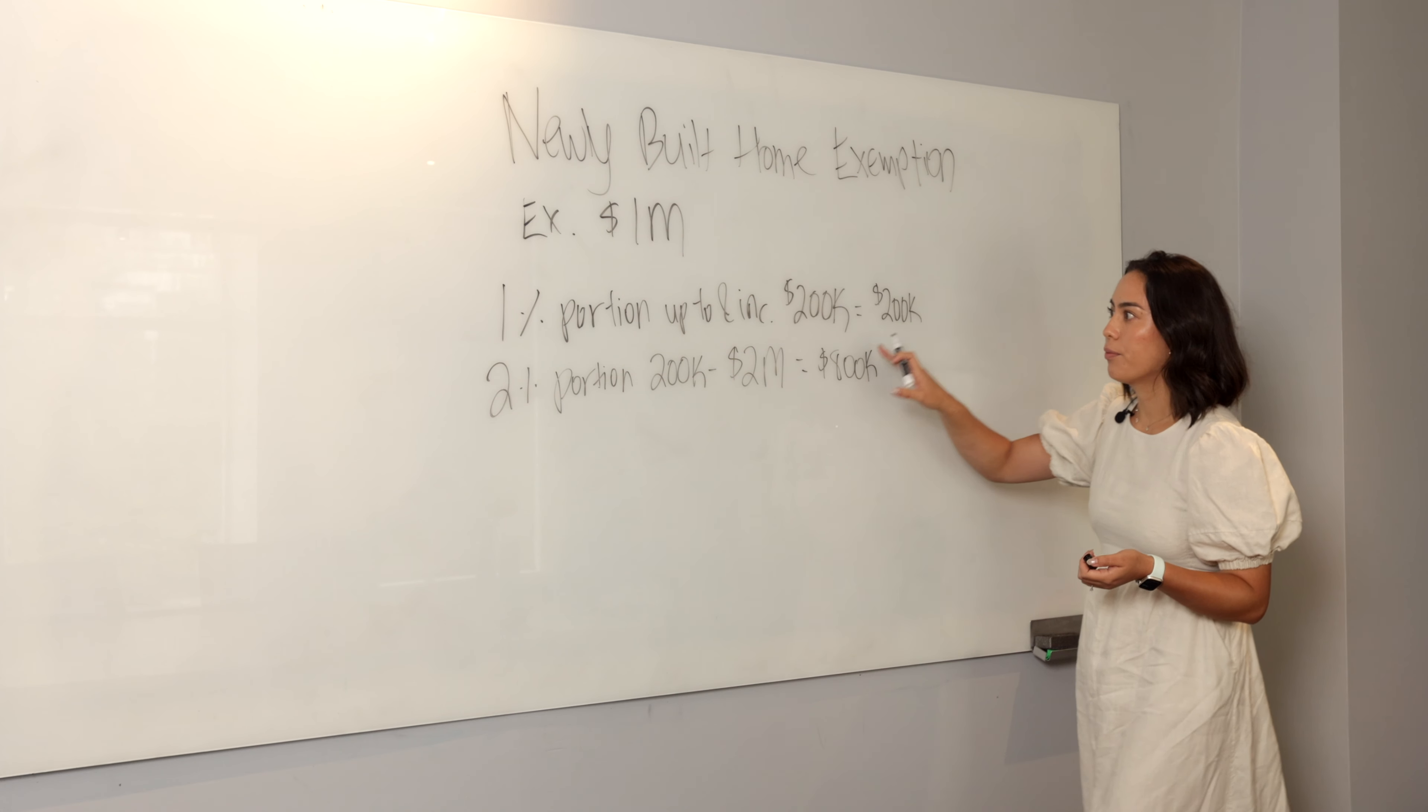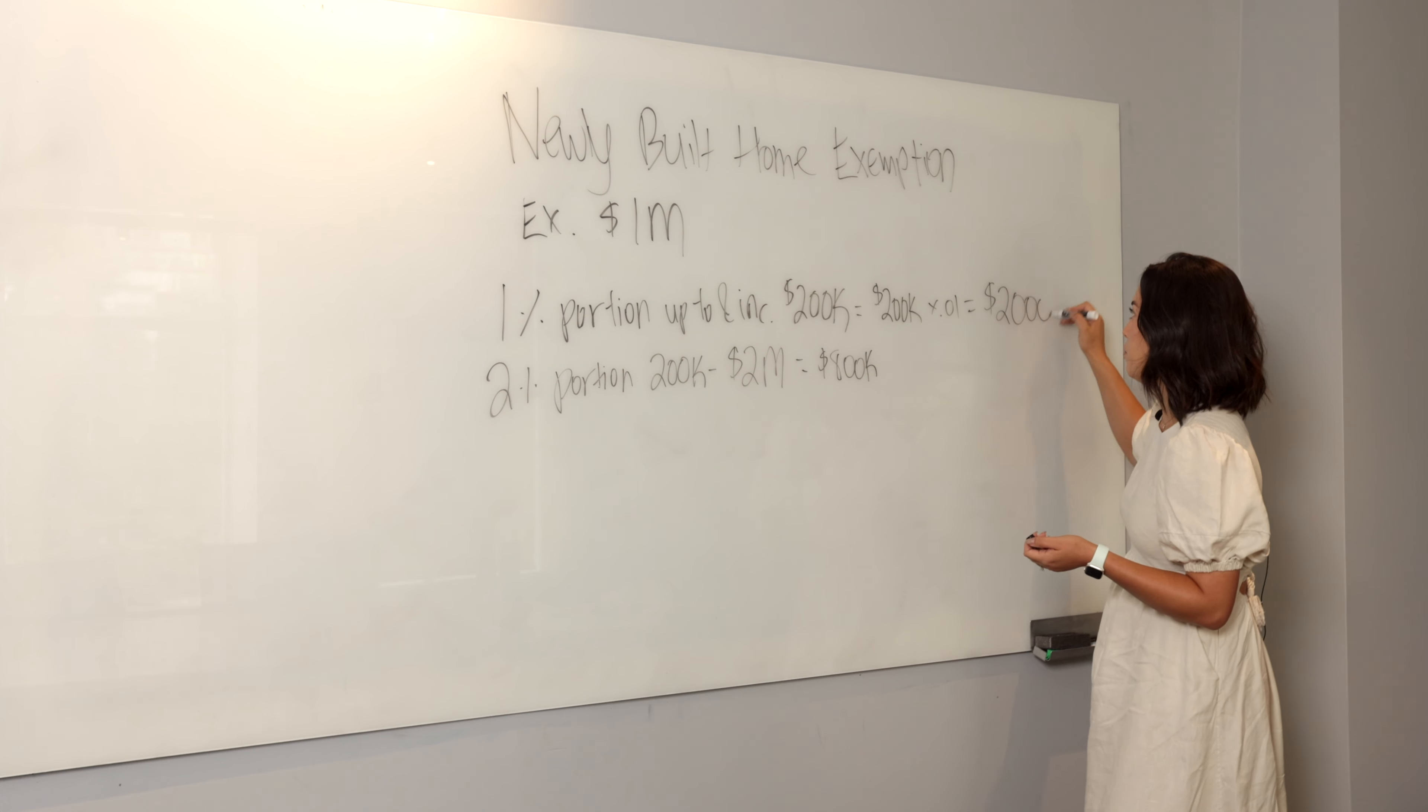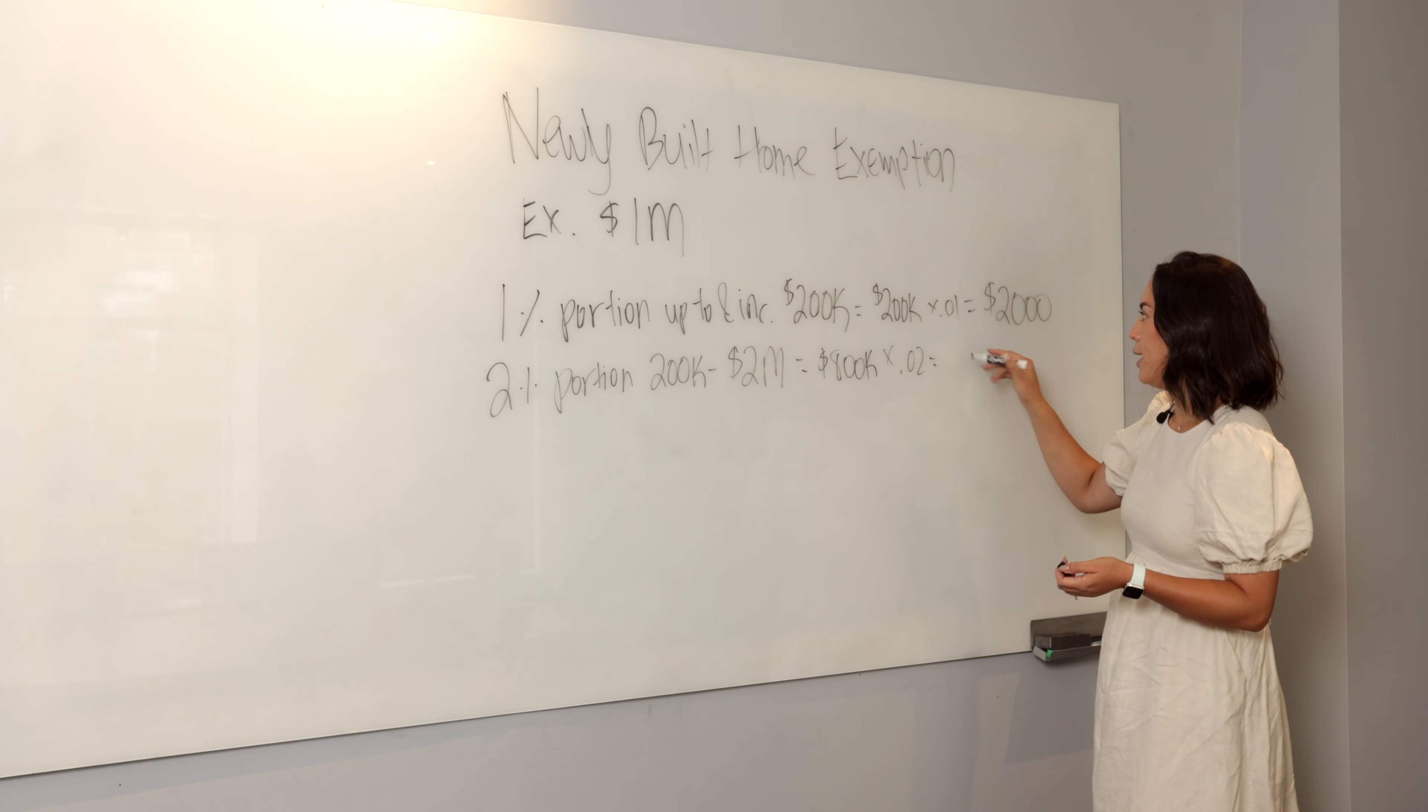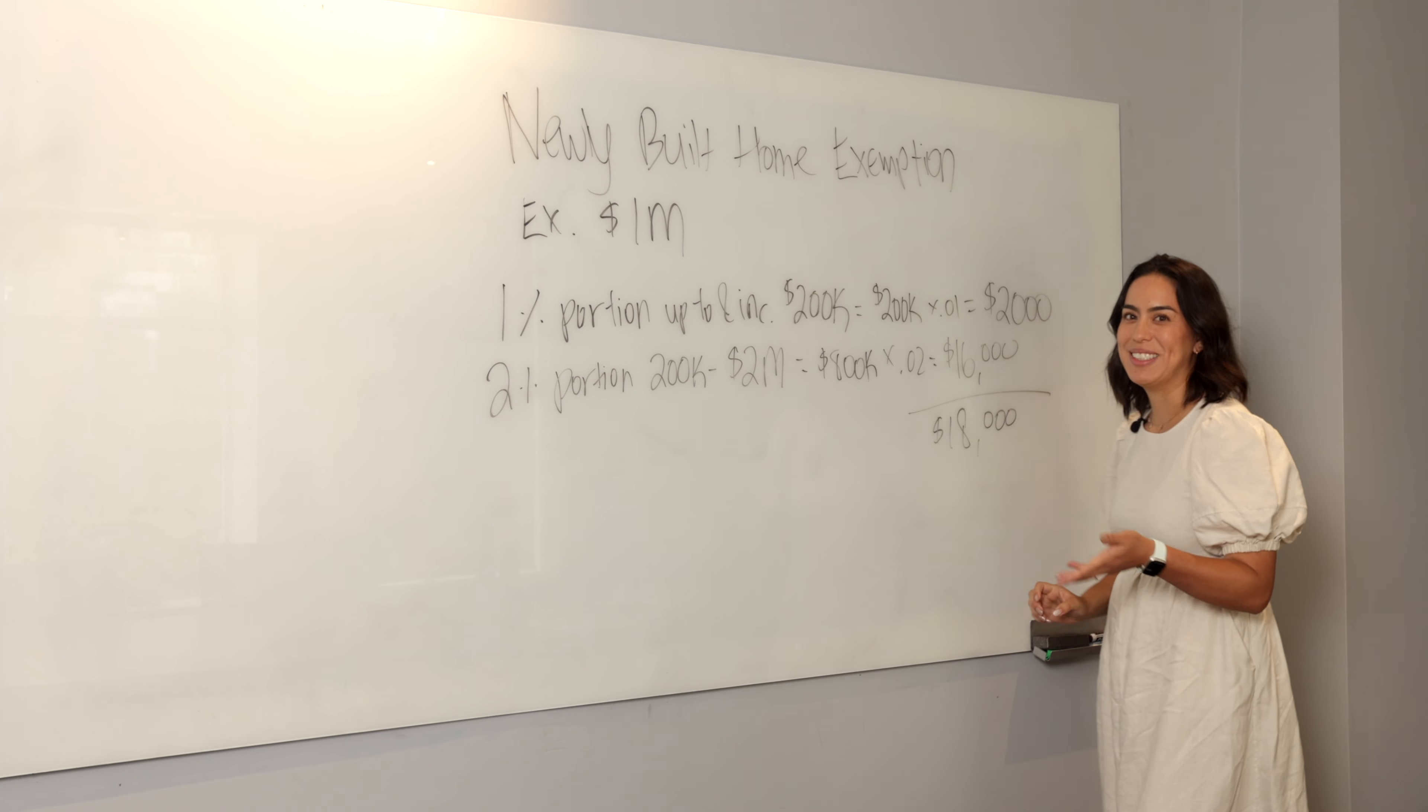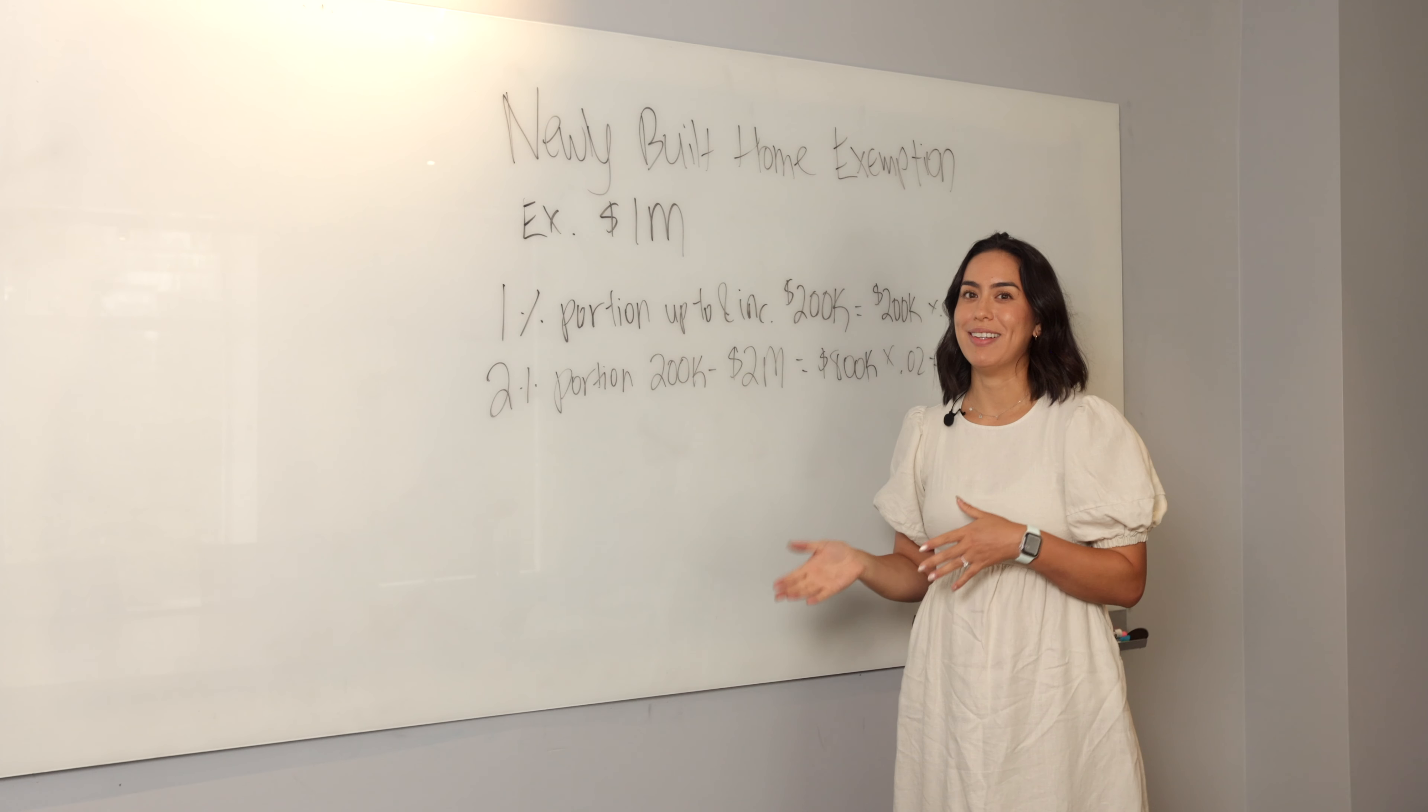$200,000 times 1%, 0.01, is going to be $2,000, same as always for this first bracket. And then the second one, we're going to take $800,000 and multiply it by 0.02, that 2%, that's going to be $16,000. So now we add it all together to find out how much you're going to be paying on $1 million. $2,000 plus $16,000 is $18,000 that you are going to owe to the government as a buyer when you register this newly built home. And you're going to be paying this at completion.